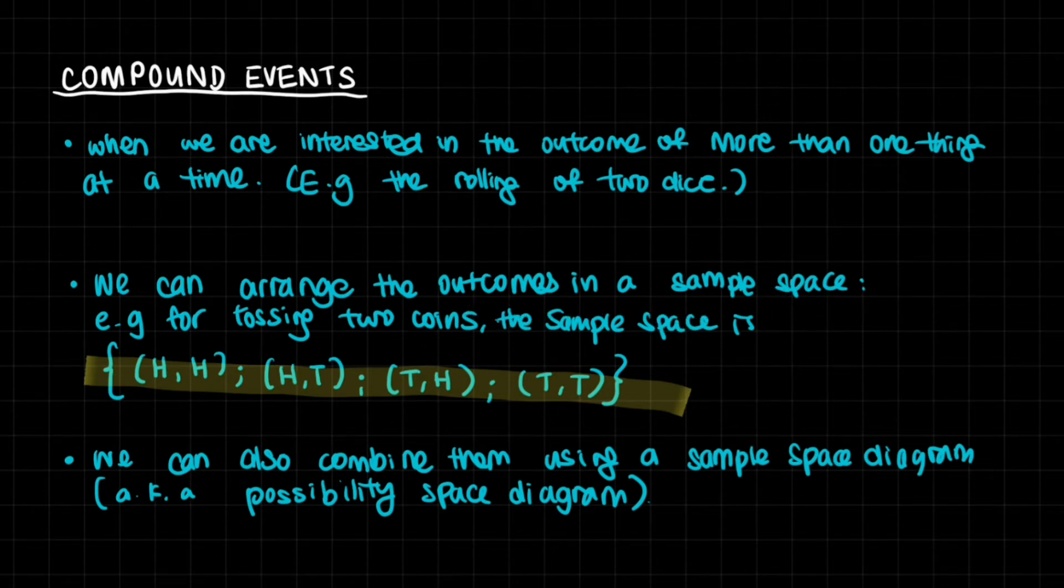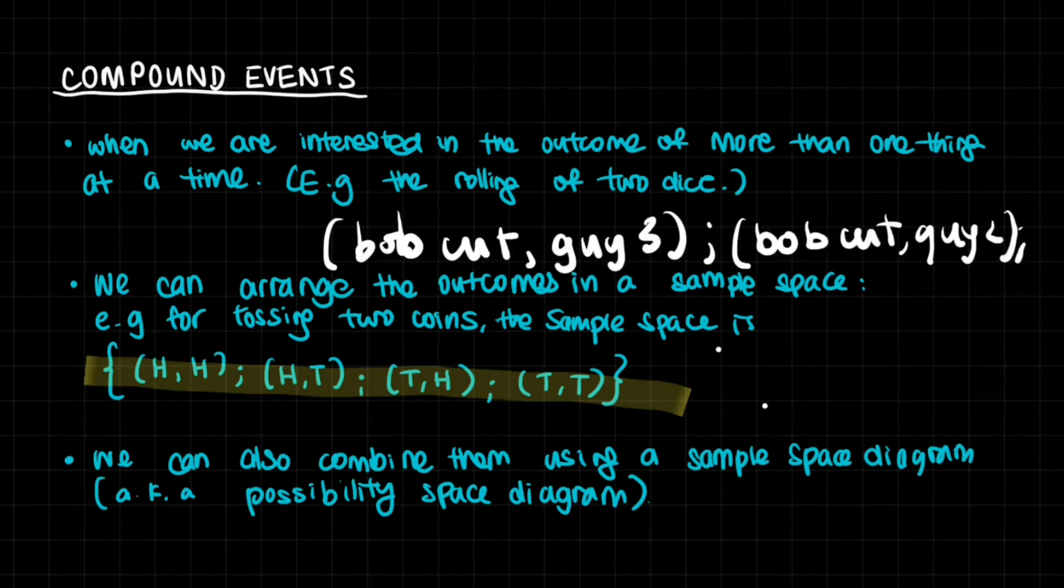So for example, you know, we could also say, this is what the sample space for the kids in our class would look like. We had all of these two, all these outcomes, and we just arranged them in these brackets.